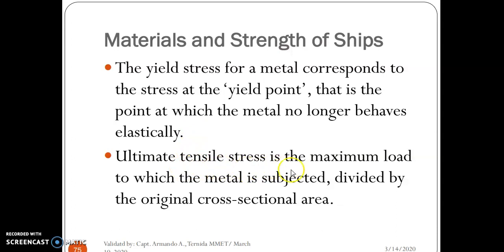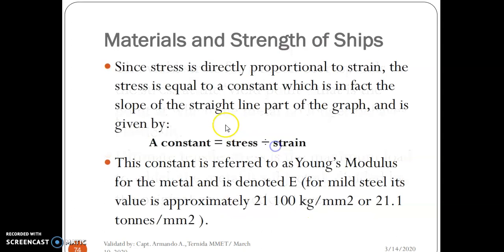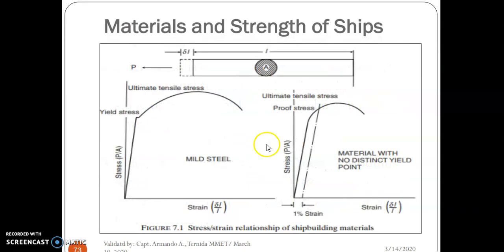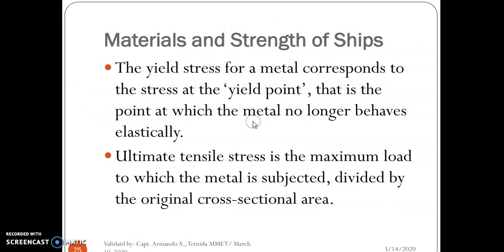Ultimate tensile stress is the maximum load to which the metal is subjected divided by the original cross-sectional area. You can see the ultimate tensile stress here. At this point, there's no elasticity anymore because it has undergone yielding stress.